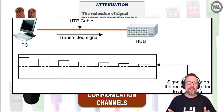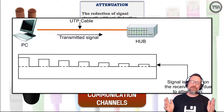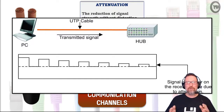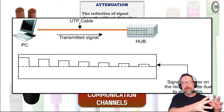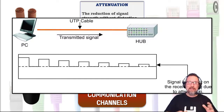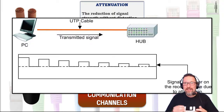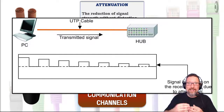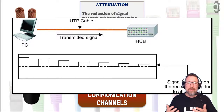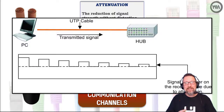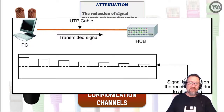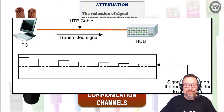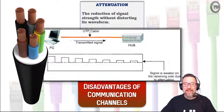That's why we have repeaters. Have you ever applied for internet access and been told you're too far from the exchange? That's because of signal attenuation — if there's no repeater to keep the signal strong enough, you won't be able to get a connection.